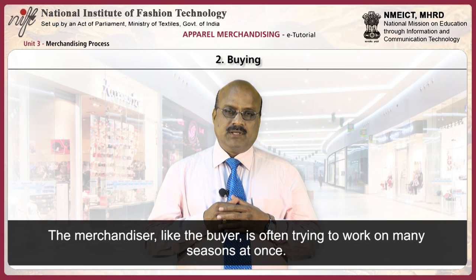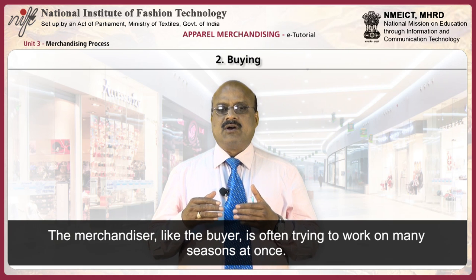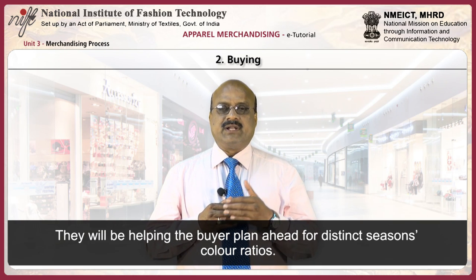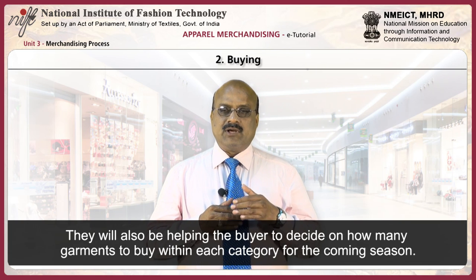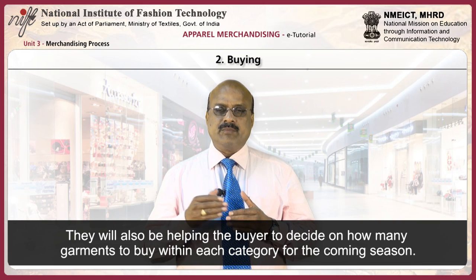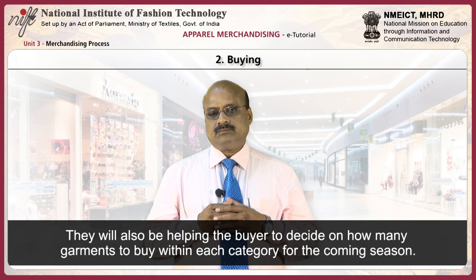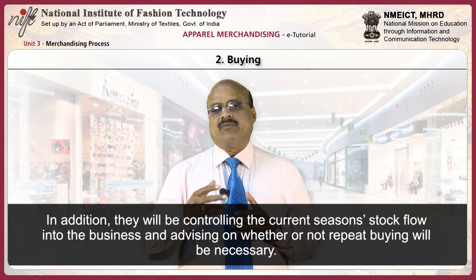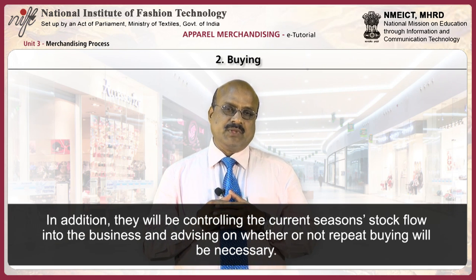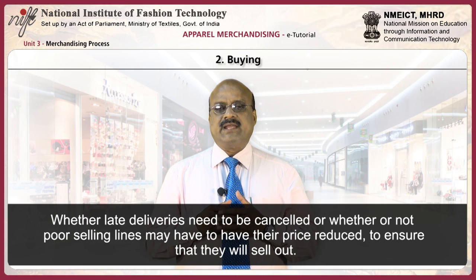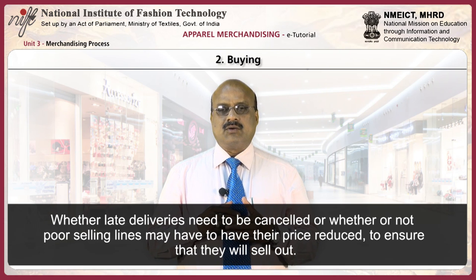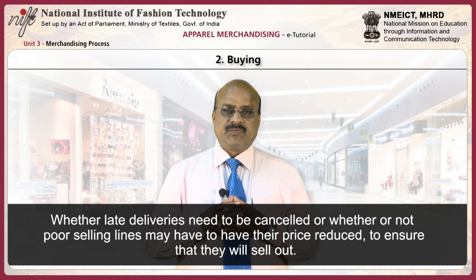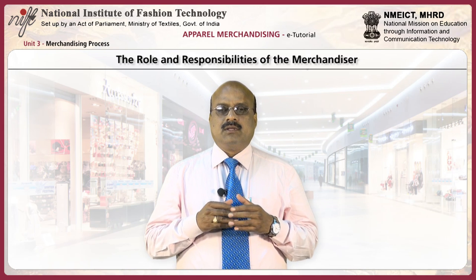Then, buying. The merchandiser, like the buyer, is often trying to work on many seasons at the same time. They will be helping the buyer plan ahead for distinct seasons' color ratios. They will also be helping the buyer to decide on how many garments to buy within each category for the coming season. In addition, they will be controlling the current season's stock flow into the business and advising on whether or not repeat buying will be necessary. The merchandiser also helps decide whether late deliveries need to be cancelled or whether poor selling lines may have to have their prices reduced to ensure that they will sell out.